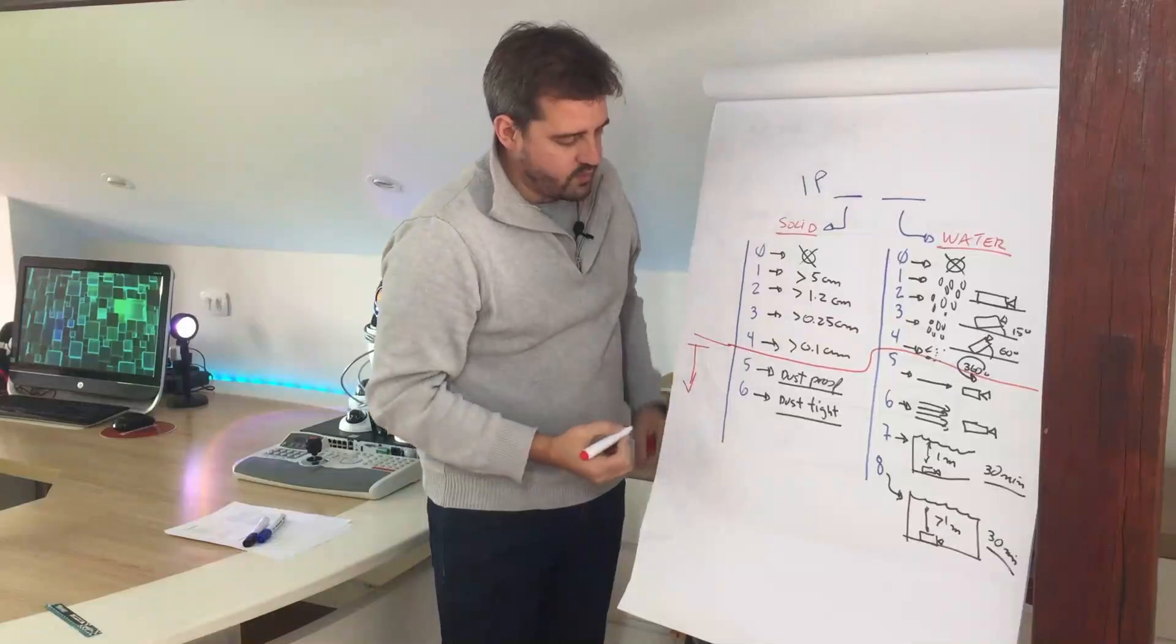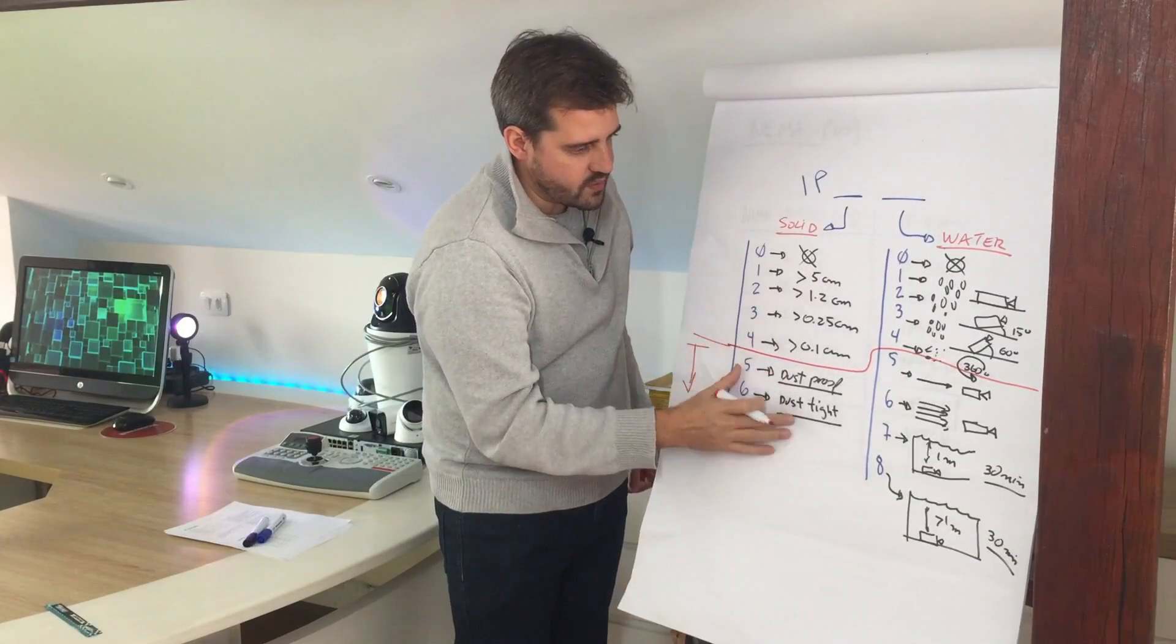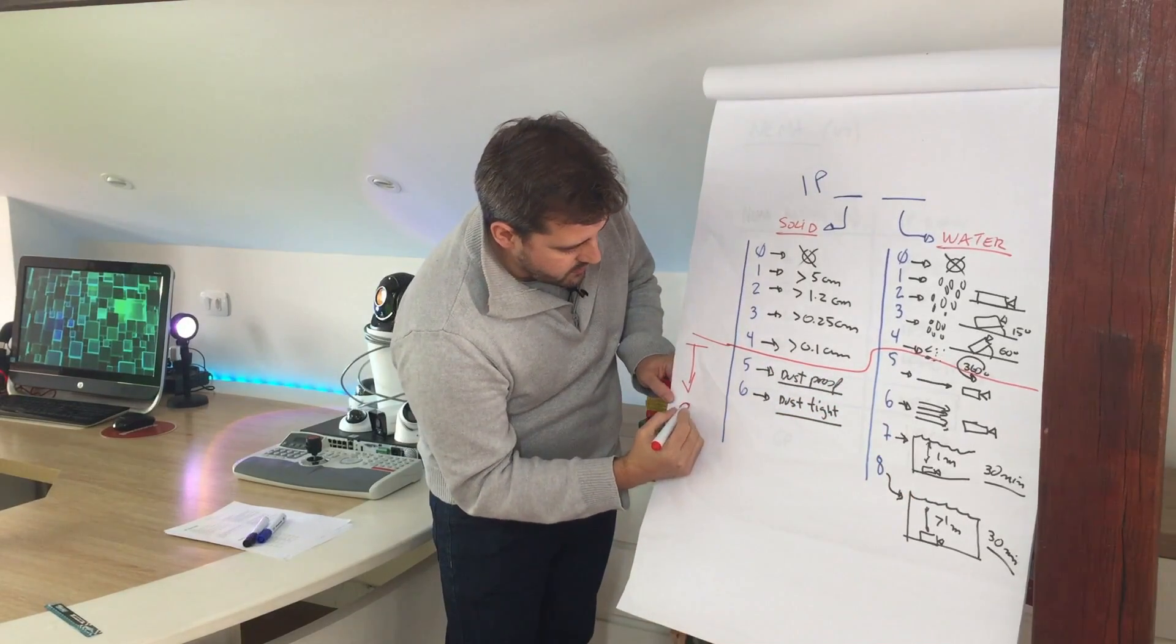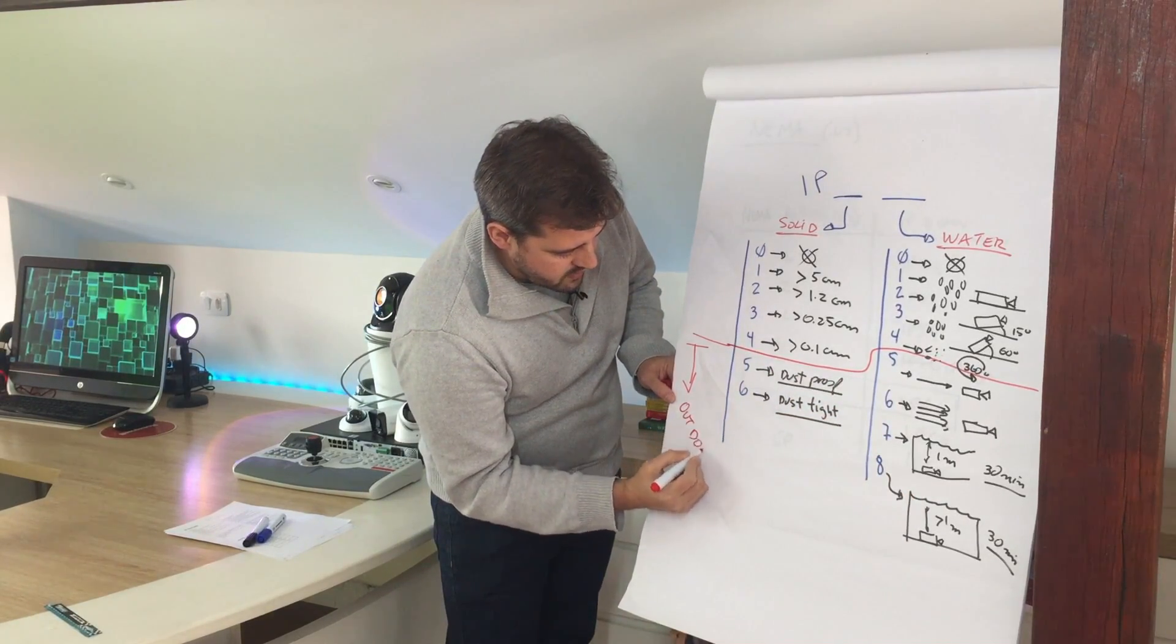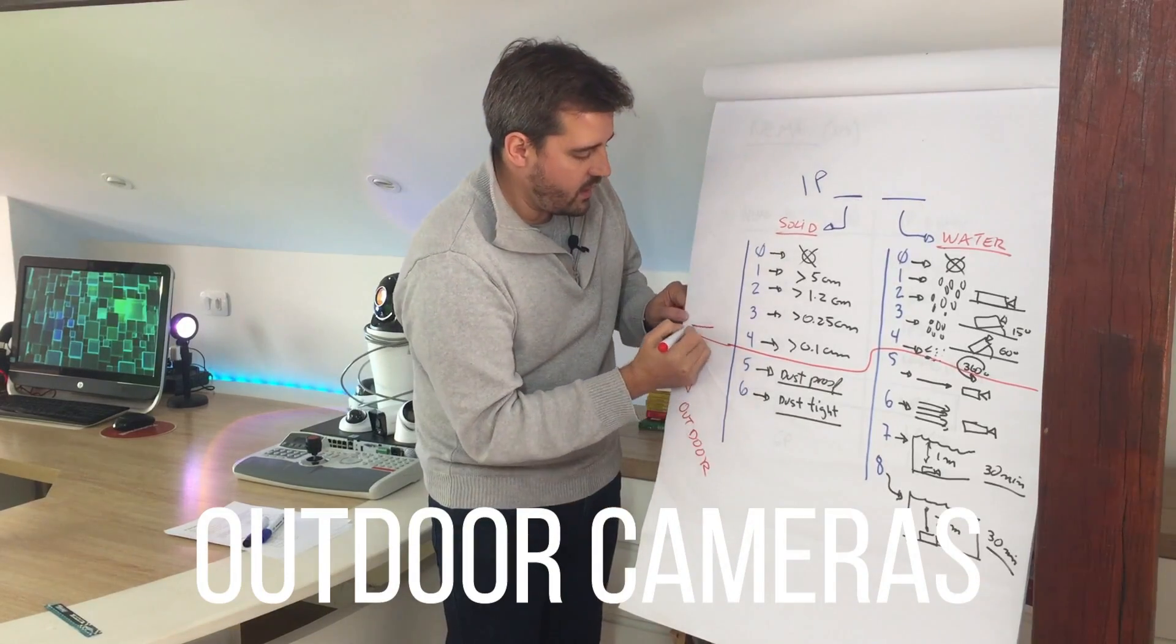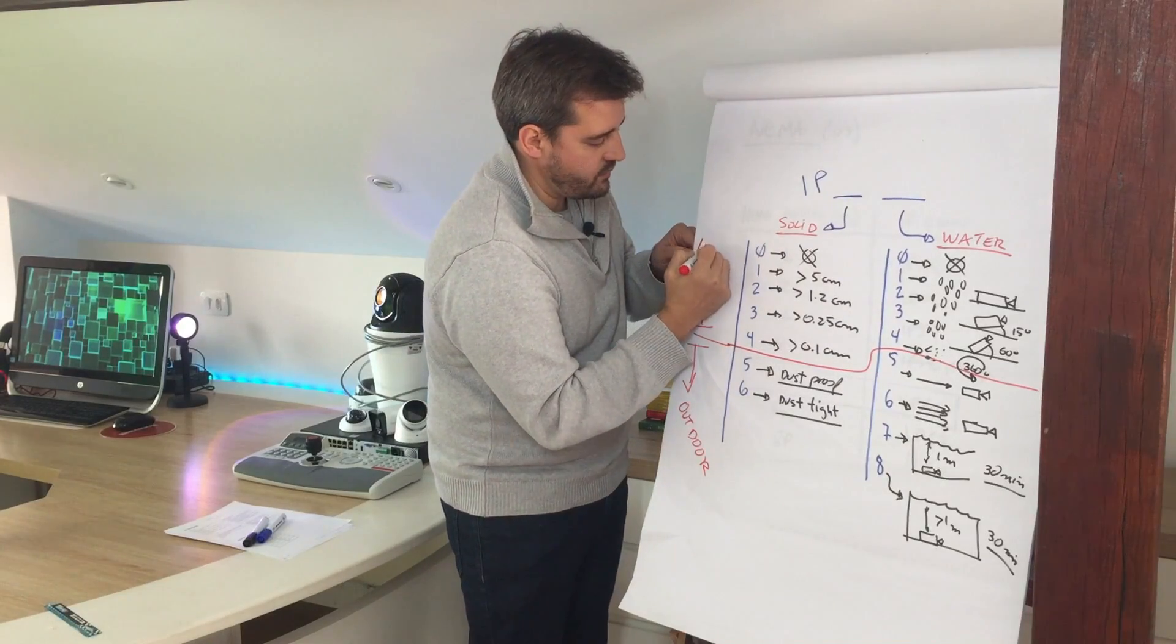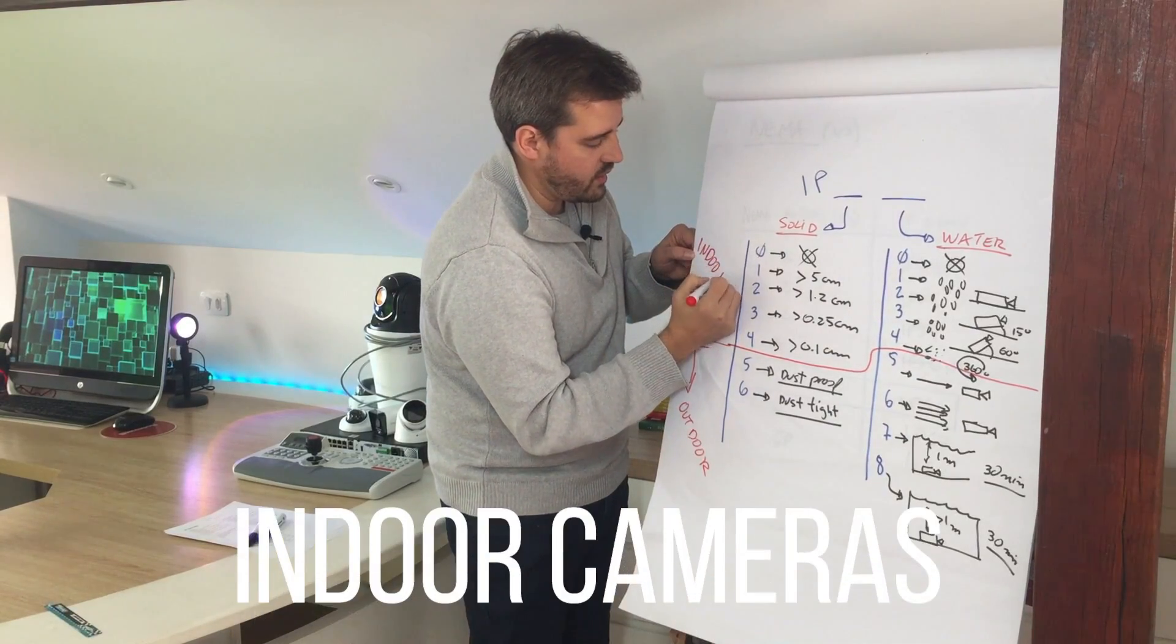So cameras with these numbers of solid and water protection are considered the outdoor cameras, and cameras classified on this top area are classified as indoor cameras.